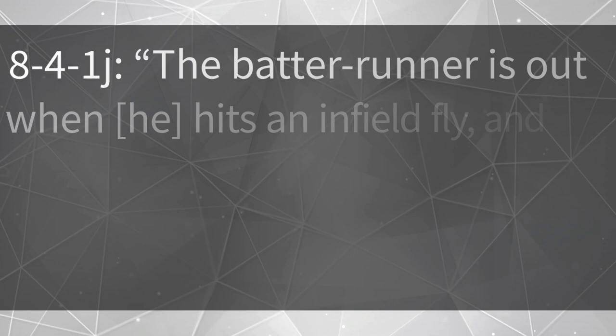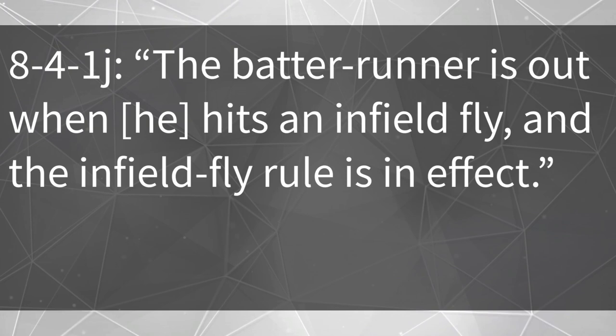Now that we've defined an infield fly, let's review the results. Rule 8-4-1J: the batter-runner is out when he hits an infield fly and the infield fly rule is in effect. This means there will not be a force out on the other runners, because they won't lose their right to the base due to the batter-runner. The rule also does not remove their need to retouch when a caught batted ball is first touched, and the ball remains live and in play.